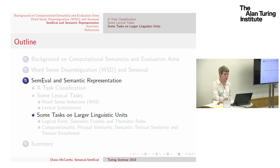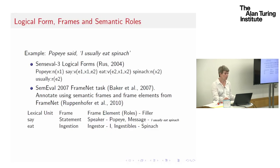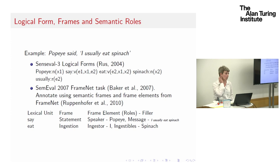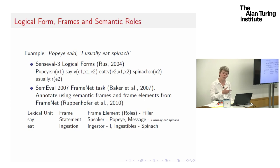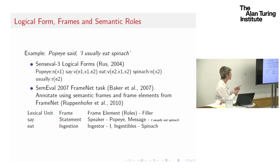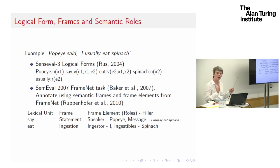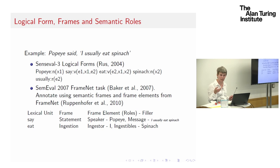I'm now going on to tasks on larger linguistic units. I spoke already about traditional logical forms — a sentence like 'Popeye said I usually eat spinach,' and the task was to mark up the main verbs and nouns as predicates with shared variables, where those variables show the relationships in the sentence. For example, 'say' is an event where x1 is in the first role, and the second event is 'eat.' x1 is shared between being the agent of 'say' and also of 'eat.'